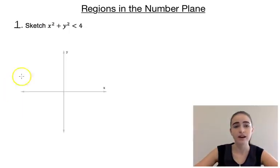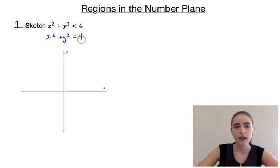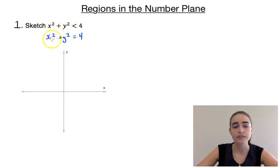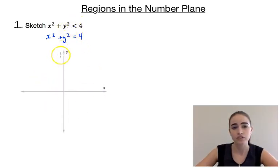The first example asks us to sketch the region x² + y² < 4. We pretend for a second that it says x² + y² = 4 and graph that curve. We should recognise that equation represents a circle centred at the origin with a radius of 2. Because this is a less than sign, when we sketch that circle it's going to be a dotted line, not a solid line.